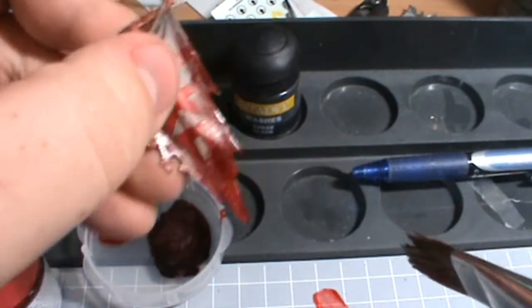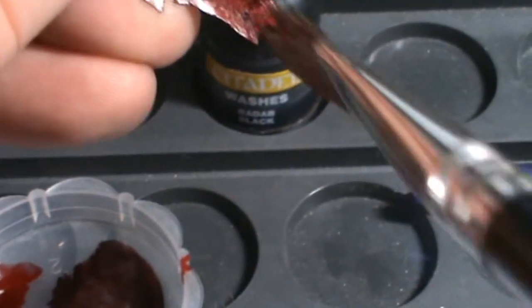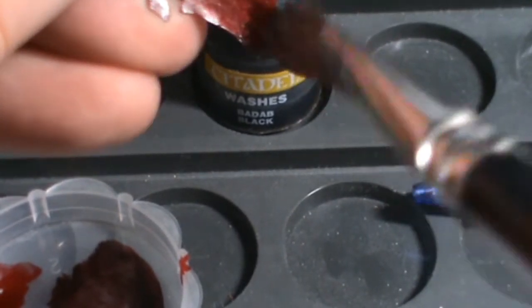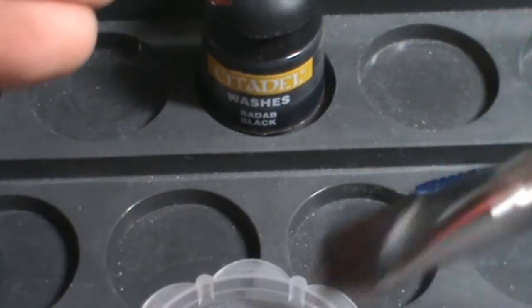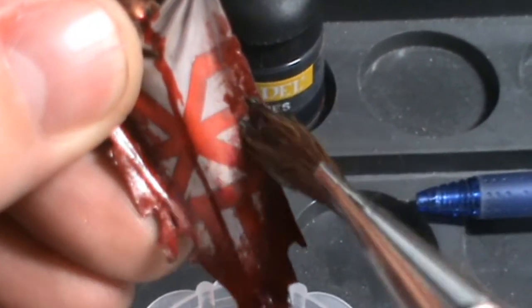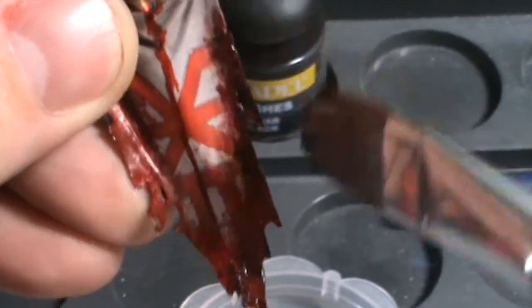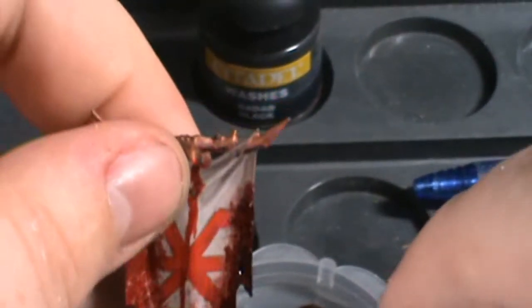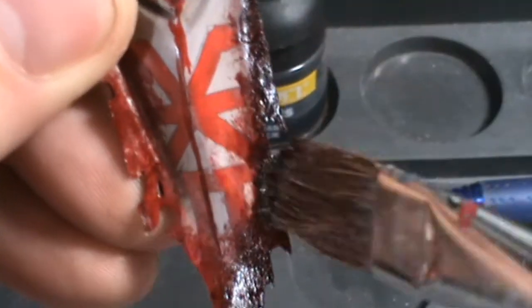Here we go, a little tip of the brush up at the bottom here. Don't be scared to actually get quite a bit on. At the end of the day, this is supposed to look like thick, coated gore. So yeah, there you go. That is the effect using the Game Color ink and the Tamiya clear red.